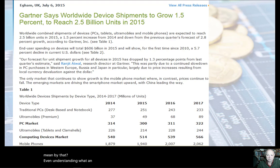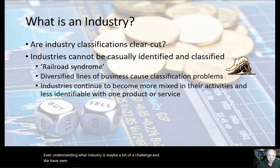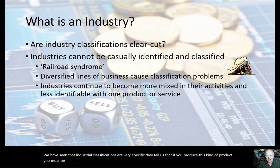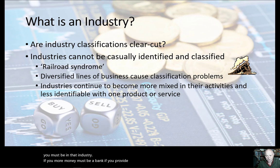Even understanding what an industry is can be a challenge. Industrial classifications are very specific — they tell us that if you produce a certain kind of product, you must be in that industry. If you loan money, you must be a bank. If you provide transportation services, you're an airline or a railway.